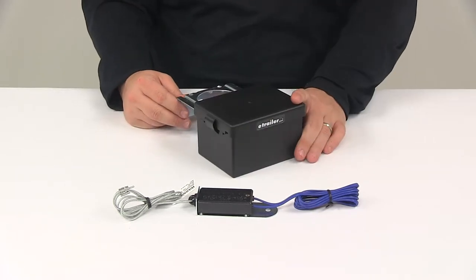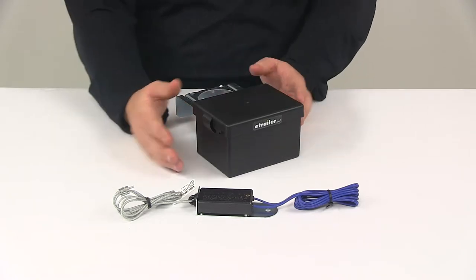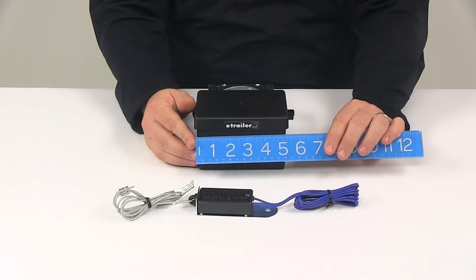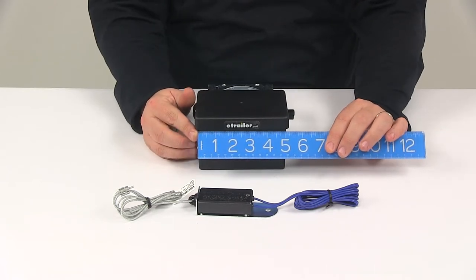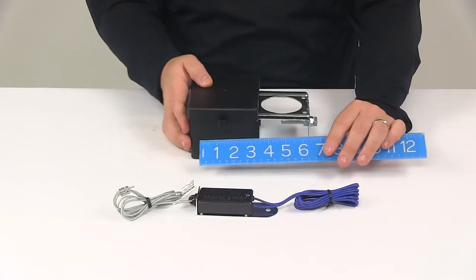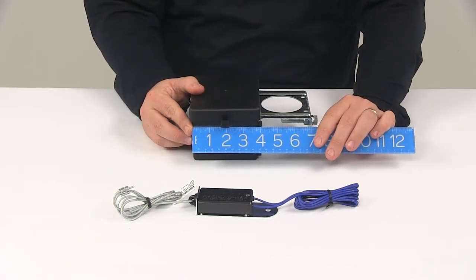This system's designed for one to three axle trailers with electric brakes. Taking a few measurements of the case, starting with the length just right there below the lid. The actual case measures five inches long. It's going to measure about three and seven eighths to four inches wide.